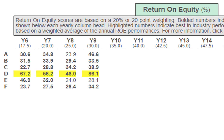Next we have return on equity. Company D is best in industry at 86.1. Everyone else met expectations except Company E. But looking at Company E's trend — year 6 they were at 46, year 7 at 32, year 8 at 24, so they dropped — and then year 9 they went to 28. My thought is they're probably implementing a strategy that caused a temporary dip, but now they're back on the upswing. I would not count Company E out.